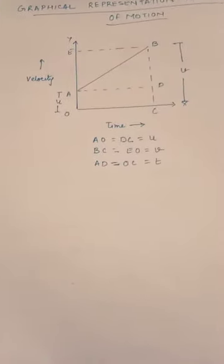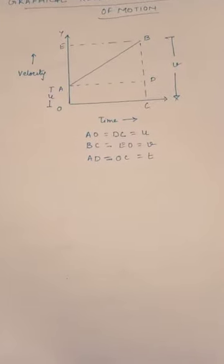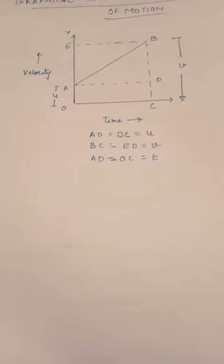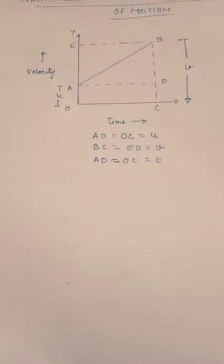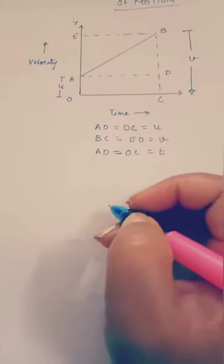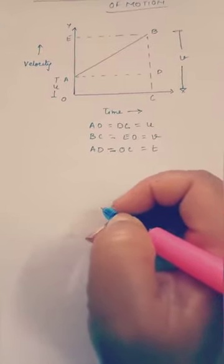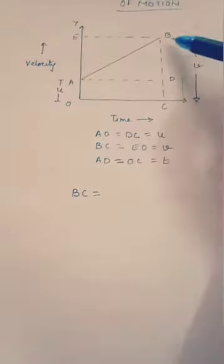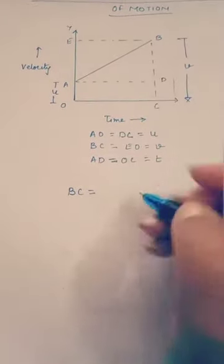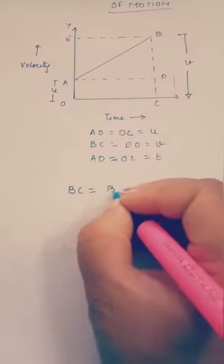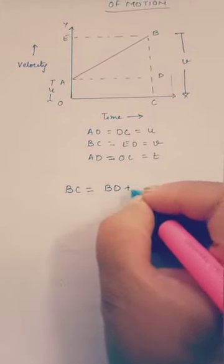Let us start with the very first equation V equals to U plus AT. This is known as the velocity-time relationship. To derive it, we start from the final velocity. Final velocity is BC, so we write BC equals BD plus DC.